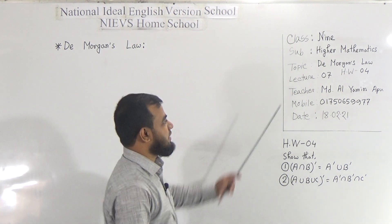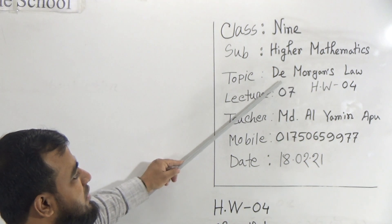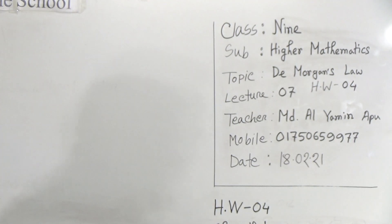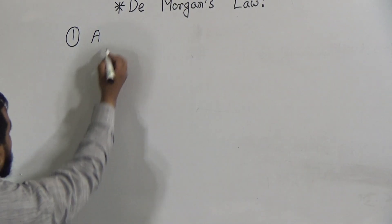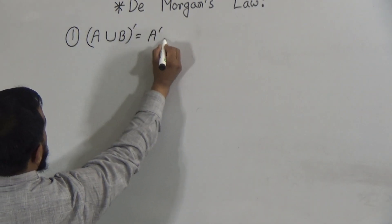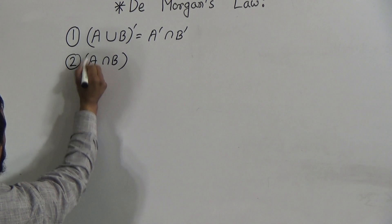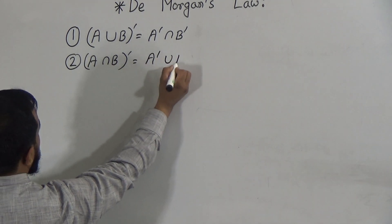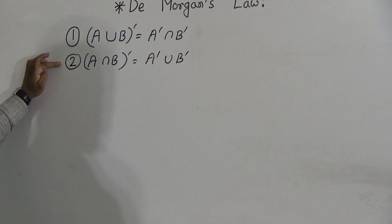Today's lecture number is seven and your homework number is four. Our today's topic is De Morgan's Law. De Morgan's Law has two propositions. Number one: if there are two sets A and B, then A union B whole prime equals A prime intersection B prime. Number two: A intersection B whole prime equals A prime union B prime. I will solve only number one; number two will be your homework.